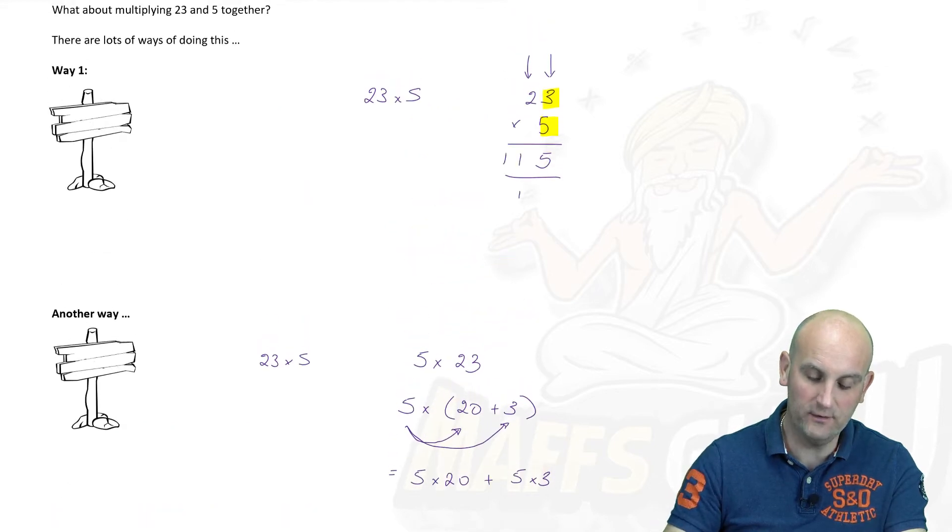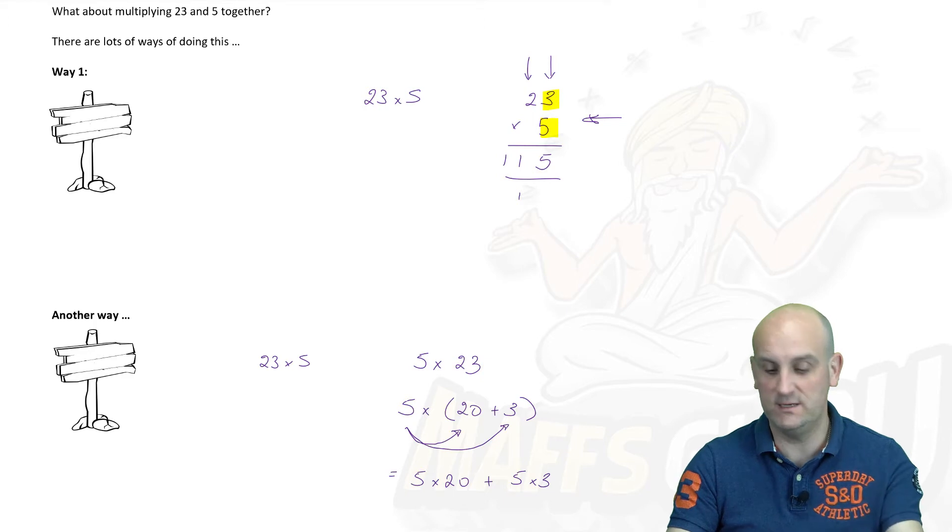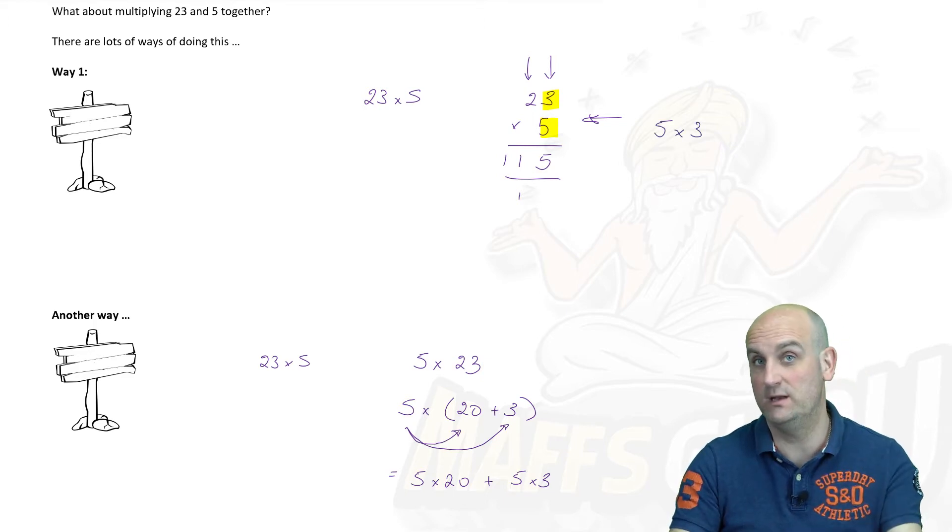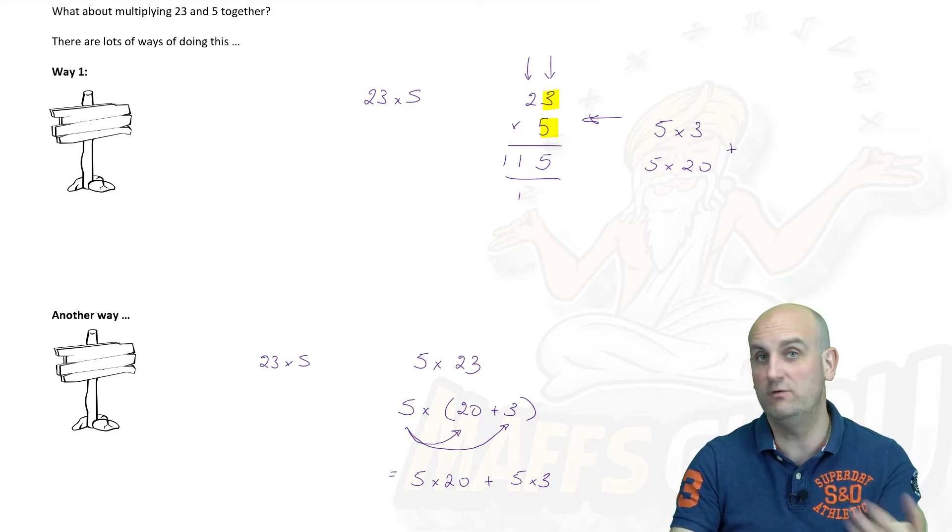Now again that is no different from what we did here. If you remember the first step we did was 5 times 3. That was the first step we did. And then we did this 5 times the 2. But what we had to remember was that was the same as 5 times 20. What do we then do? We actually, whether we realized it or not, we were adding those two results together.